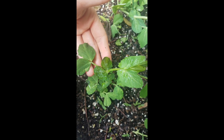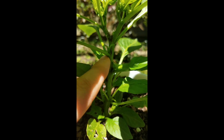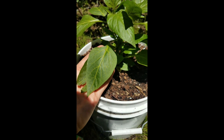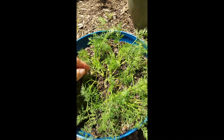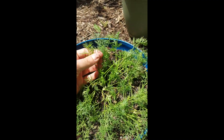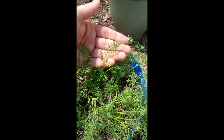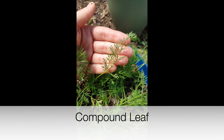We have a young pepper plant. You can see with the pepper plant we have the stem and the node, making the pepper plant a simple leaf plant. This is dill, and if we look at dill we have the stem, then the node, and from that node there are several leaves that come off of that node, so that makes dill a compound leaf plant.